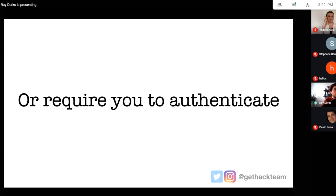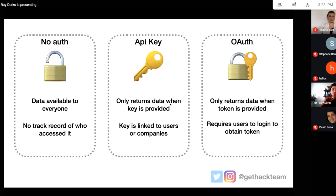You can secure endpoints using HTTPS, but you also want deeper authentication for your APIs since it doesn't sufficiently protect your data by itself — you may want to limit the amount of data someone can see. There are three main ways: no authentication at all (all data is available to everyone, but there's no track record of who accessed your data), API keys (linked to an organization or person so you can see who is using the key and even set rate limiting), or OAuth.